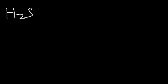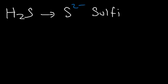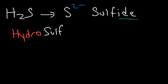H₂S contains the monatomic ion sulfide, which is S²⁻. Because it has the ending '-ide', we need to add the prefix 'hydro-', then write the element name 'sulfur', and then the suffix '-ic'. So it's hydrosulfuric acid.